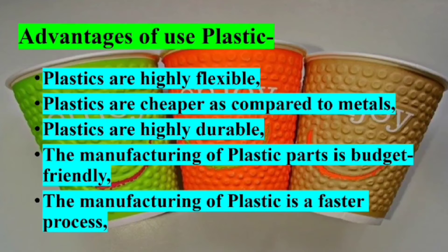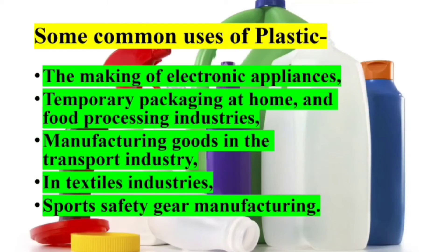The advantages of using plastic: Plastics are highly flexible, cheaper compared to metal, and highly durable. The manufacturing of plastic parts is budget-friendly and a faster process. Some common uses of plastic include making electronic appliances, temporary packaging at home and food processing industries, manufacturing goods in the transport industry, the textile industry, and sports safety gear manufacturing.